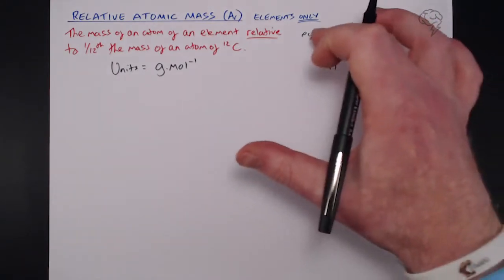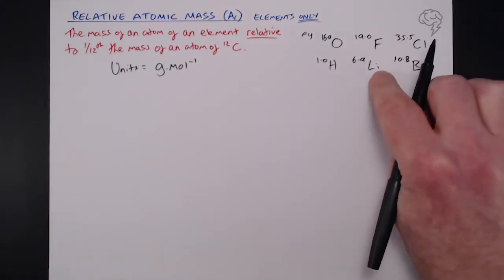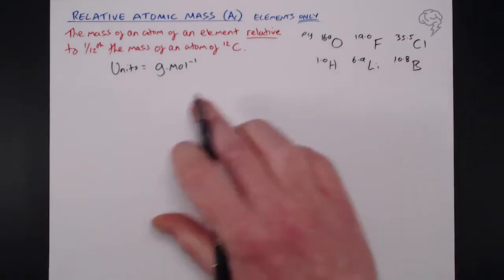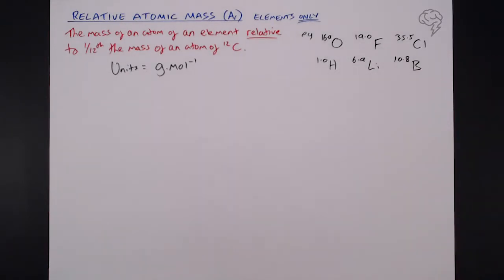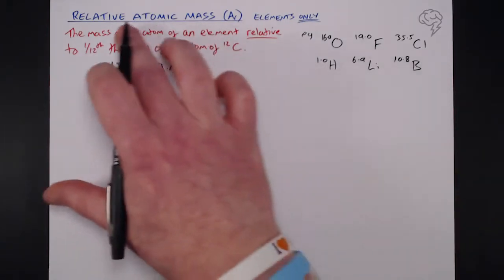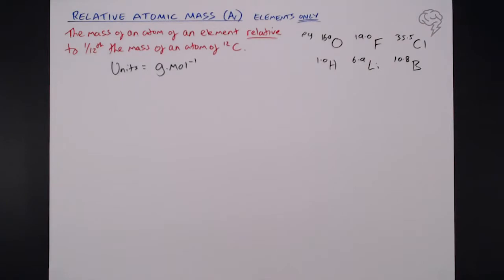So what we're saying here is these relative atomic masses, if you had one mole of lithium atoms, it would weigh 6.9 grams. If you had one mole of boron atoms, it would weigh 10.8 grams. So there are units attached. But don't forget, the relative atomic mass of a single atom is this number here.